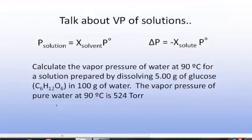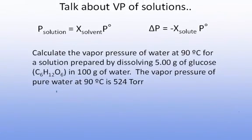So let's look at an example here. It says calculate the vapor pressure of water at 90 degrees Celsius for a solution prepared by dissolving 5.00 g of glucose (C₆H₁₂O₆) in 100 g of water. The vapor pressure of pure water at 90 degrees Celsius is 524 Torr.